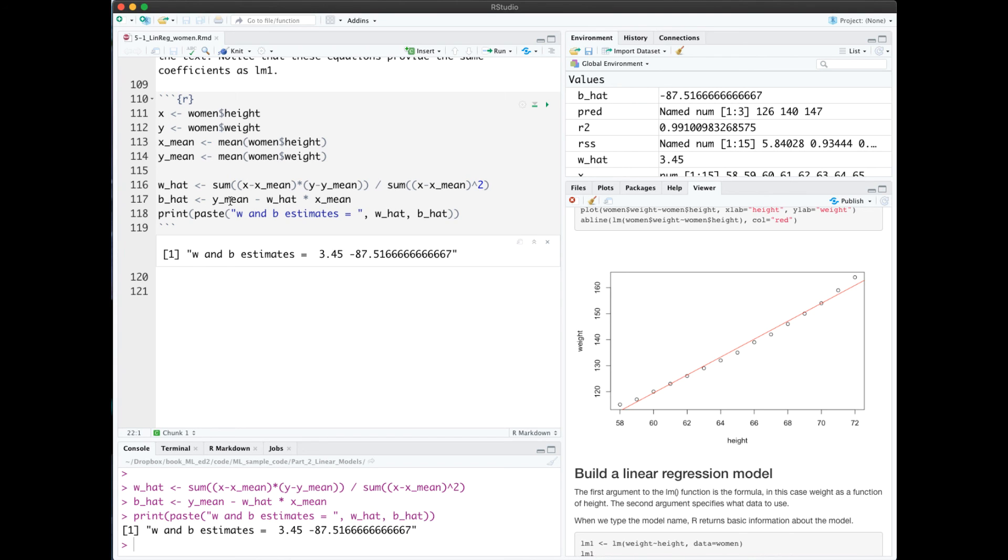And then b hat was the y mean minus the w hat times the x mean. And I printed out the values here, and notice that it's the same coefficients that we got in our linear regression model.